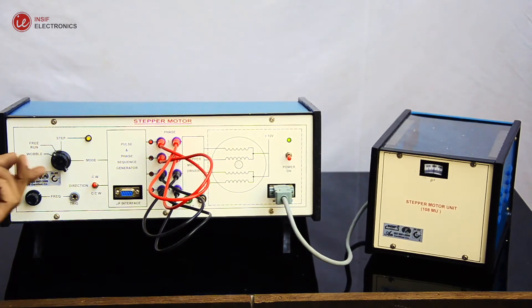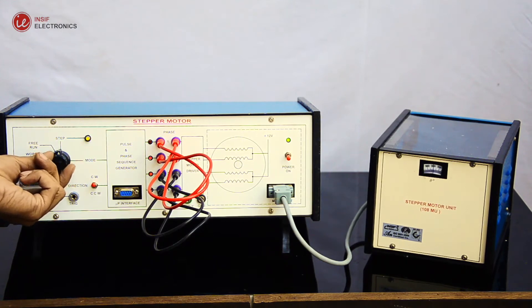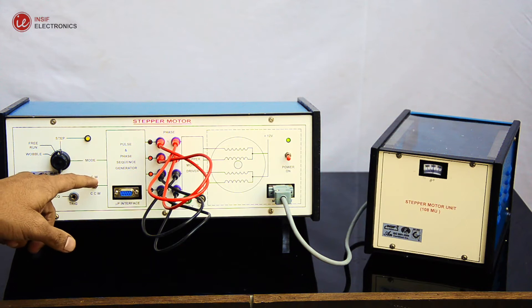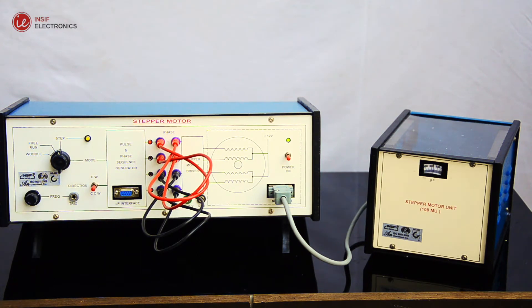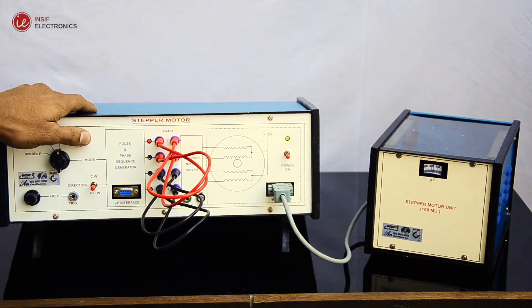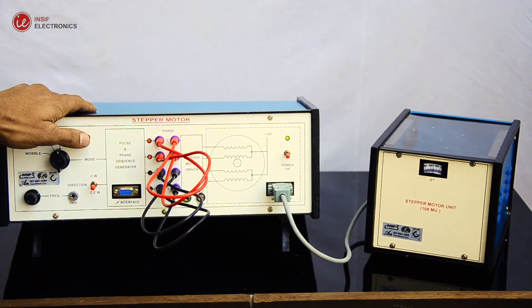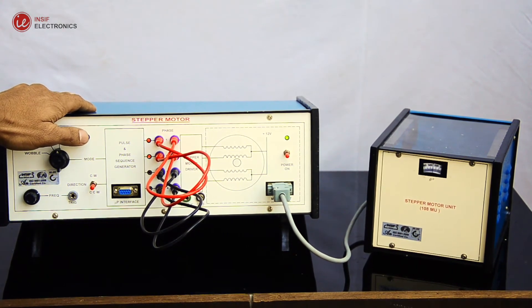Now change mode to step, and direction toggle switch to counter-clockwise direction. Change mode to free run, and you will see the motor will rotate in counter-clockwise direction.